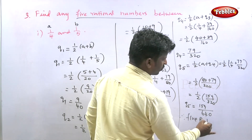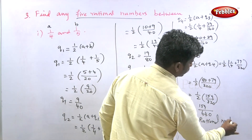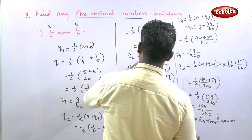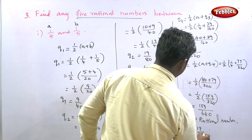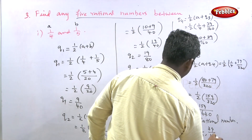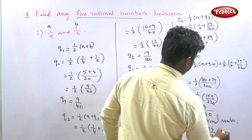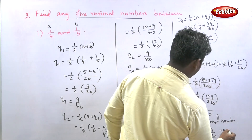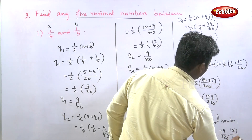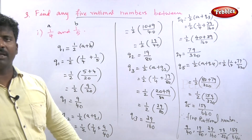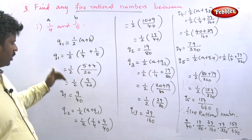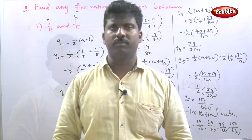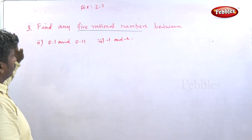Therefore the five rational numbers between 1/4 and 1/5 are: Q1 = 9/40, Q2 = 19/80, Q3 = 39/160, Q4 = 79/320, Q5 = 159/640.